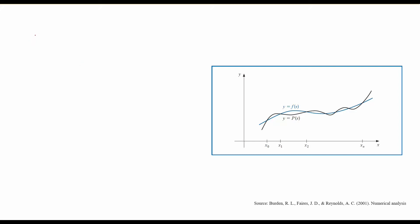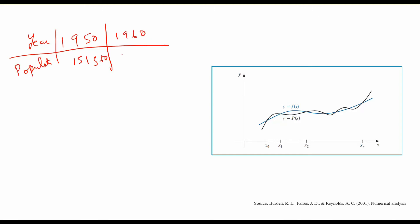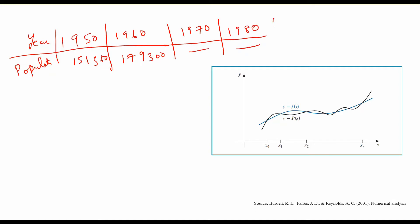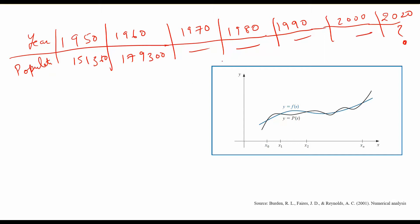Suppose that you have data — for example, you have been given population data by year: in 1950 you have some population, in 1960 again some data, in 1970, 1980, 1990, and in 2000 you have some data. Now, what you want to do is find out what the value of the population will be at 2020. This value is unknown, while the other data points are given. You can do this by finding the Lagrange interpolation polynomial.